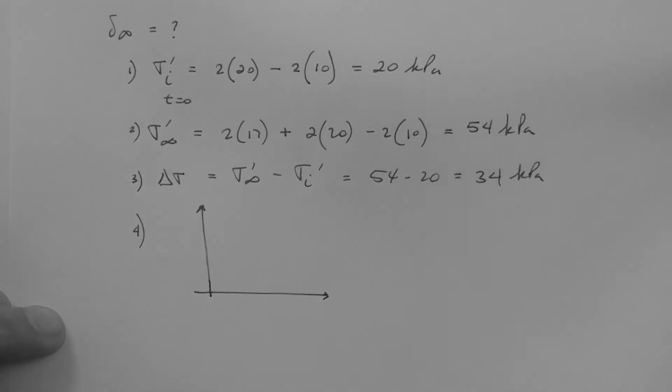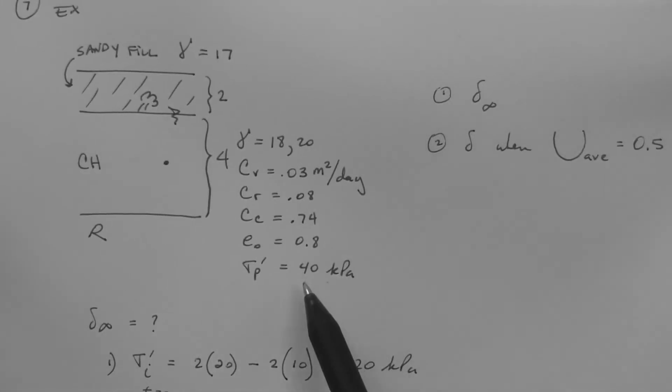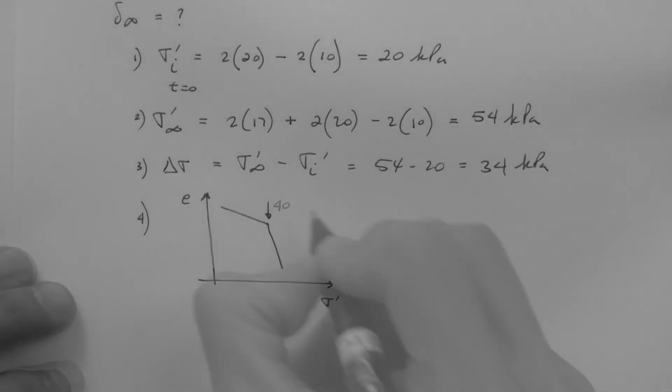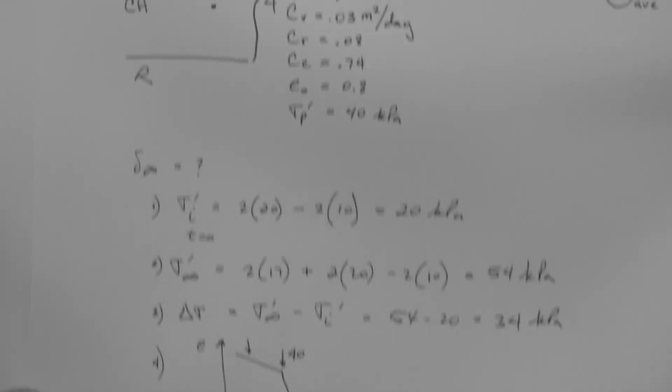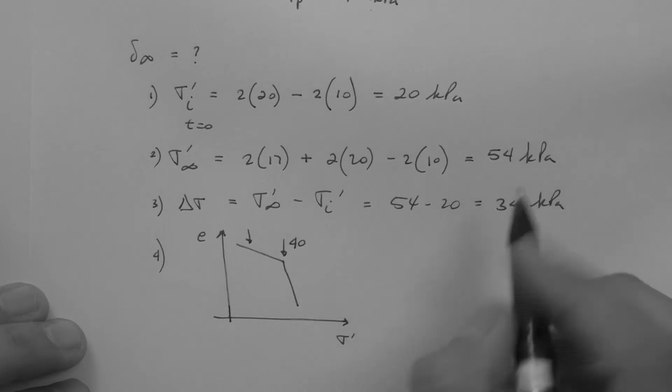Now we map the stresses so that we can determine what portions of the consolidation settlement equation we need. The pre-consolidation stress was given, 40 kPa. The initial stress, or at time equals zero, is 20. And the final stress is 54.